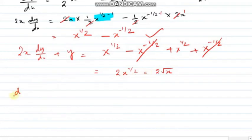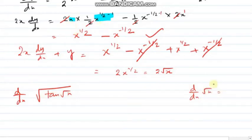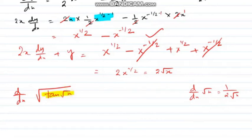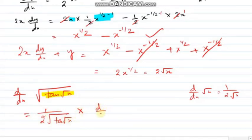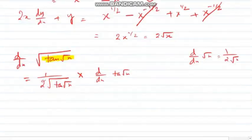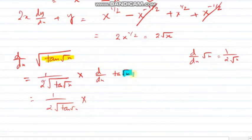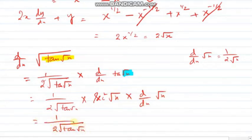A couple more sums on chain rule for practice. Find d/dx of √(tan(√x)). The formula d/dx of √x is 1/(2√x). So applying chain rule: d/dx of √(tan√x) = 1/(2√(tan√x)) times sec²(√x) times 1/(2√x).